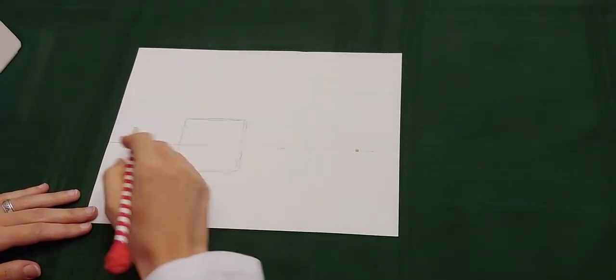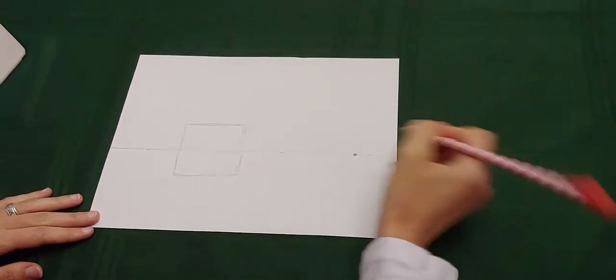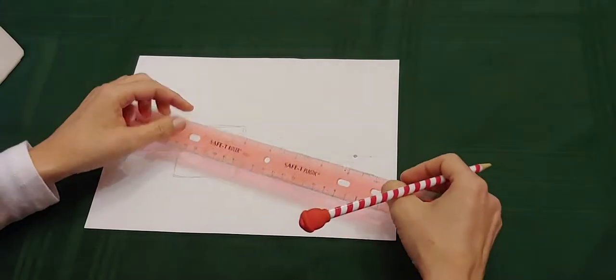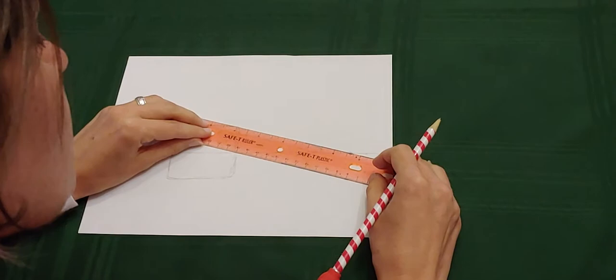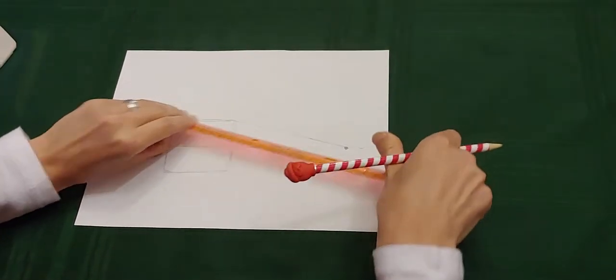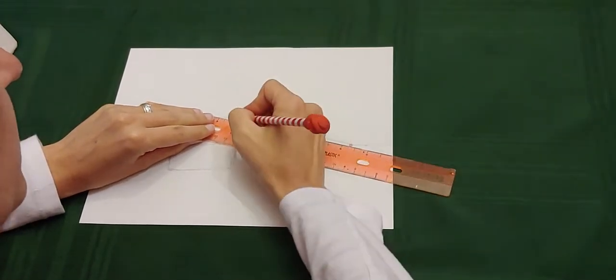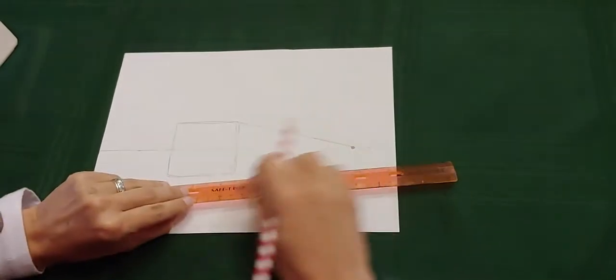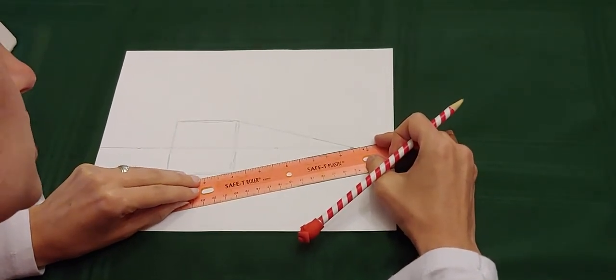Anywhere you want to put that vanishing point, just make a dot. Now you are going to take your pencil and you are going to draw a line from this corner to the vanishing point, and this corner to the vanishing point.